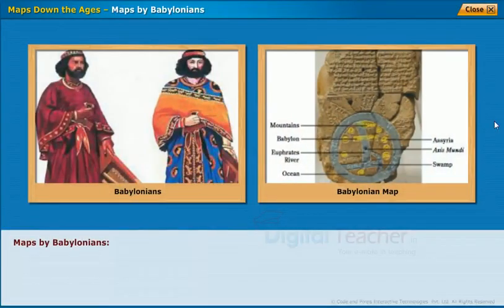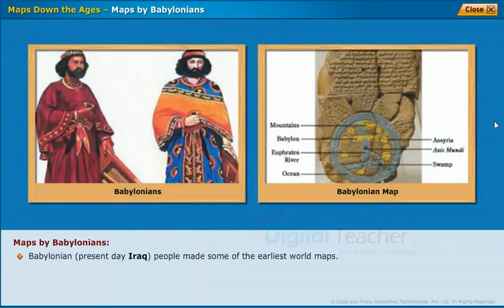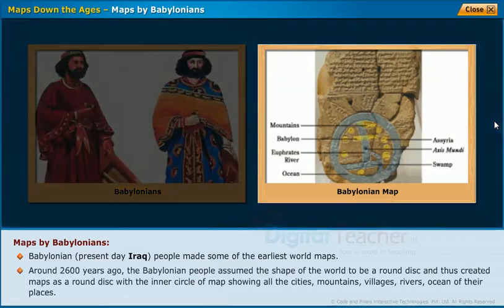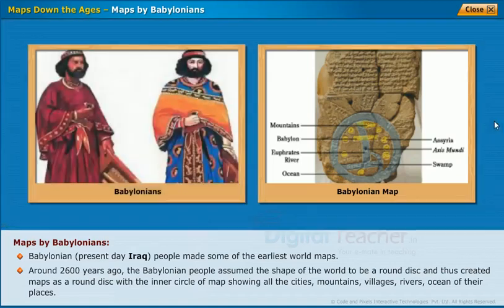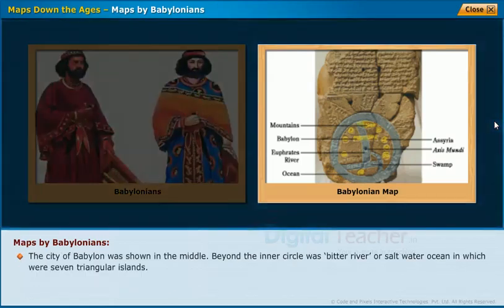Maps by Babylonians. Babylonian — present-day Iraq — people made some of the earliest world maps. Around 2,600 years ago, the Babylonian people assumed the shape of the world to be a round disk and thus created maps as a round disk, with the inner circle showing all the cities, mountains, villages, rivers, and oceans. The city of Babylon was shown in the middle. Beyond the inner circle was the Bitter River or Saltwater Ocean, in which were seven triangular islands.